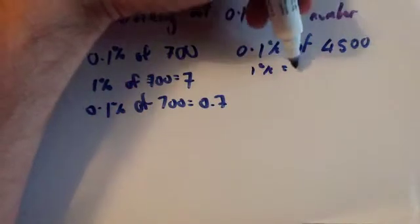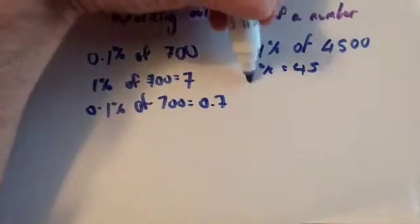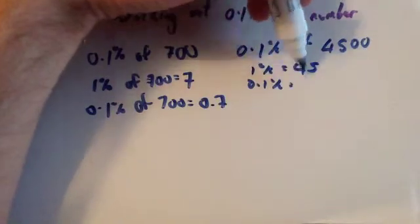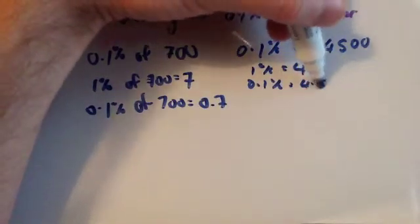So divide by 100, take off two zeros, 45. And then, to get 0.1%, you divide 1% by 10 to get 0.1%. So divide 45 by 10, so you get 4.5.